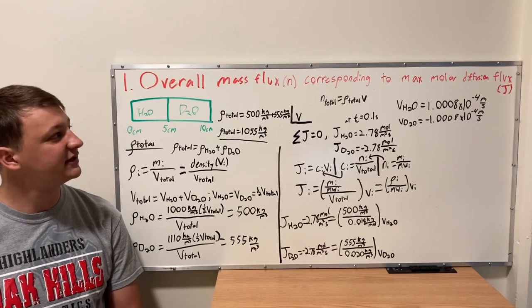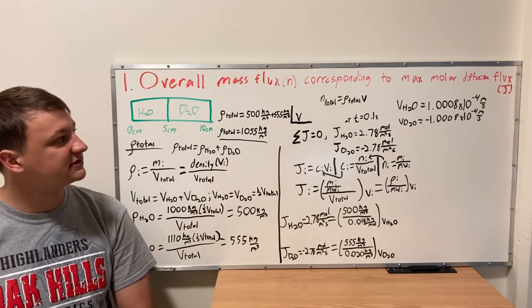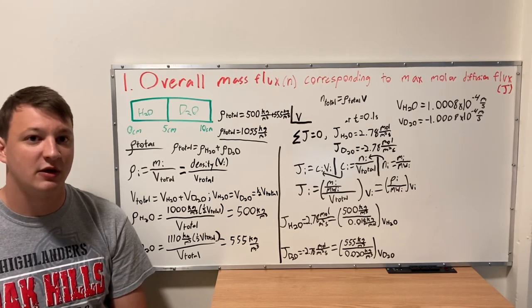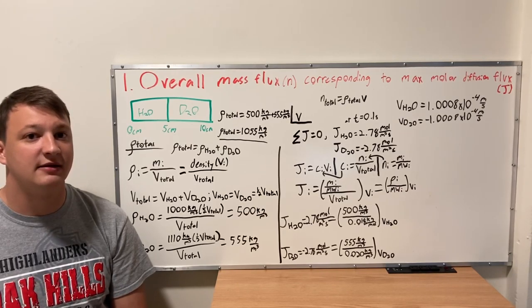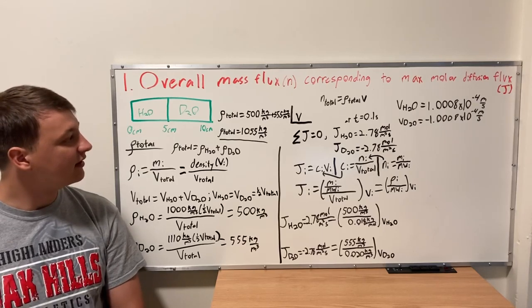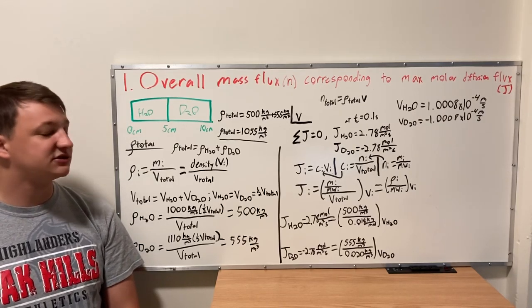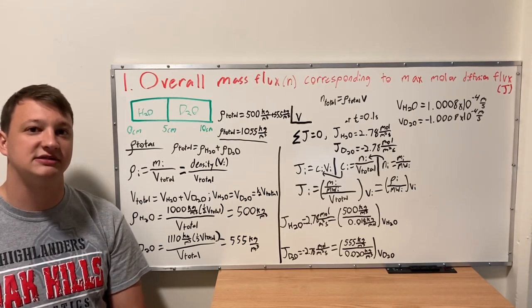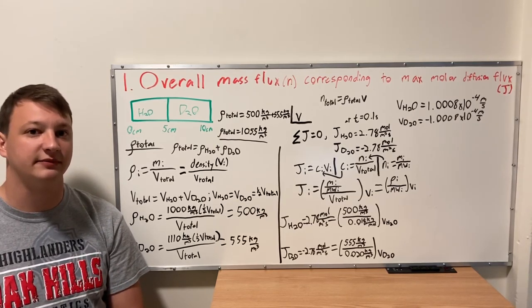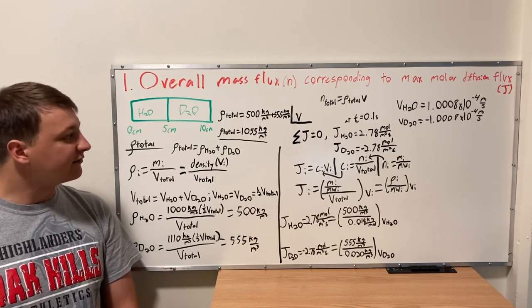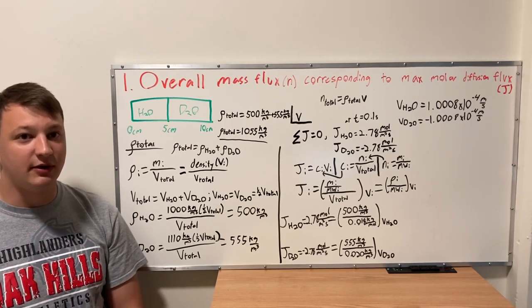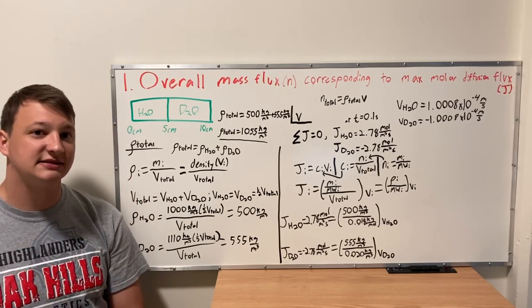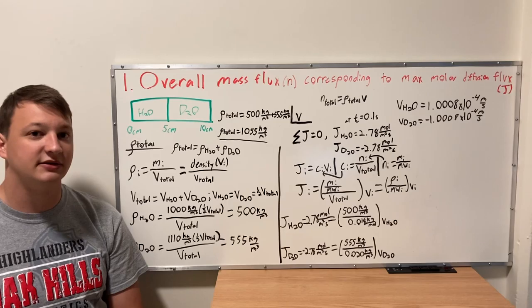For this we're going to look at the equation: total mass flux equals total mass concentration times velocity. We're first going to look at finding mass concentration. We know that the total mass concentration is the sum of the parts — mass concentration of H2O plus mass concentration of deuterated water. To find one or both, you use mass concentration of i equals the mass of i divided by the total volume.